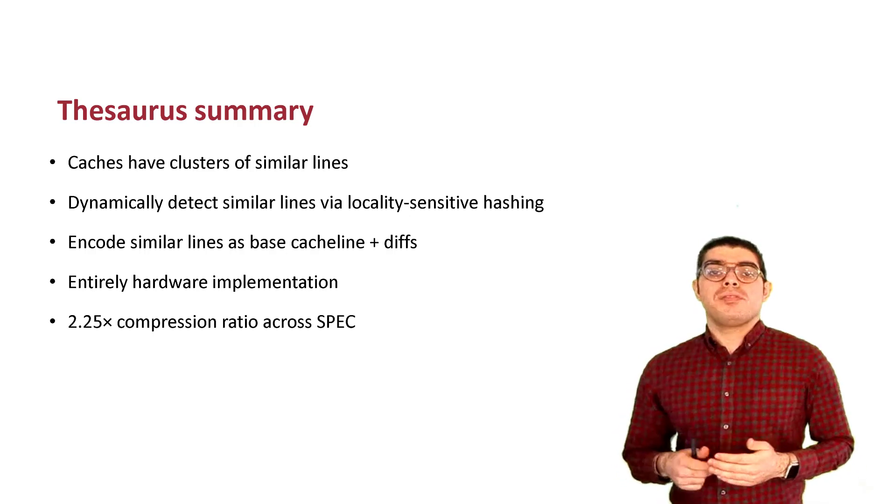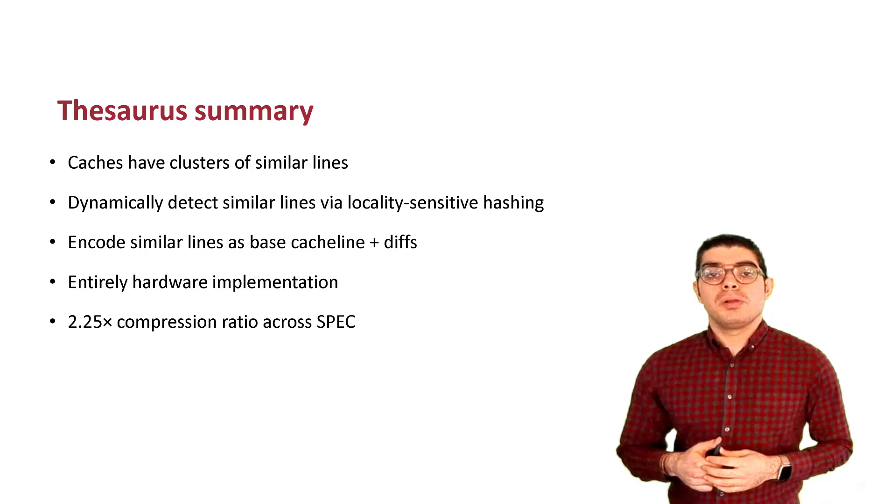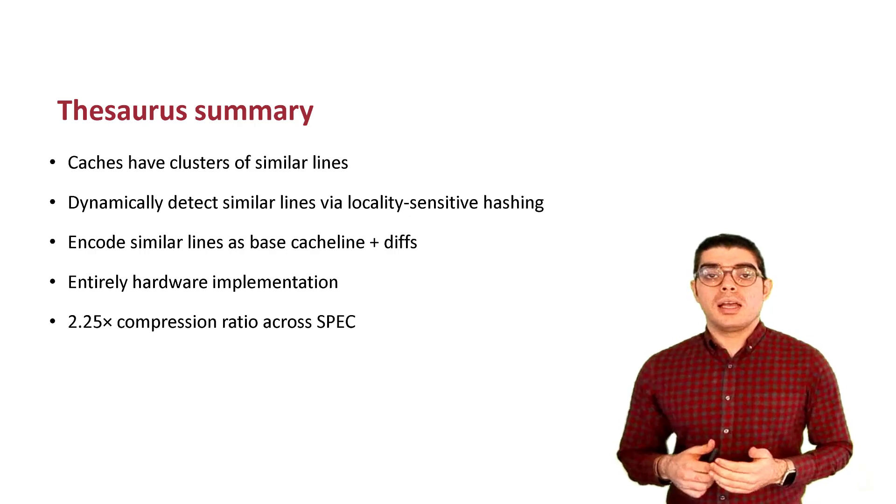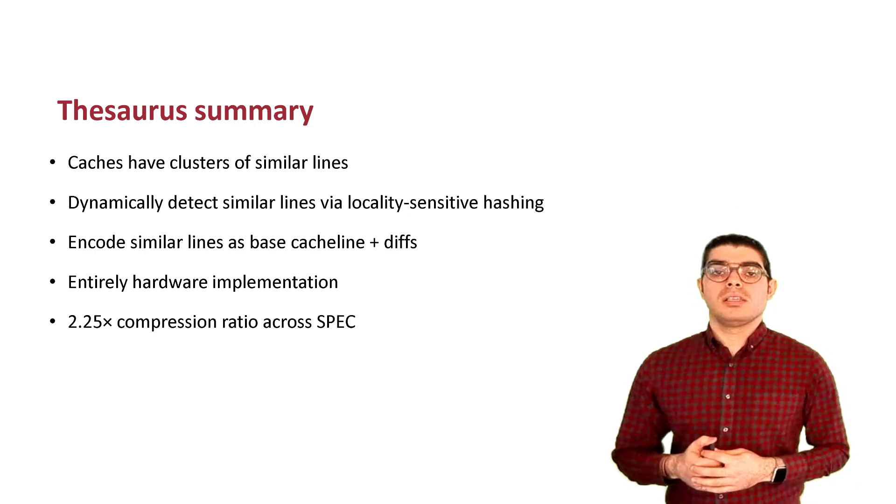In summary, we demonstrated that caches have clusters of similar data lines. We propose Thesaurus, which dynamically detects similar data lines via locality-sensitive hashing and encodes incoming similar data lines as a base cache line and diffs. We showed efficient hardware implementation achieving 2.25 times compression on average across SPEC CPU 2017. If you have further questions, please don't hesitate to reach out to us. Thank you for listening.